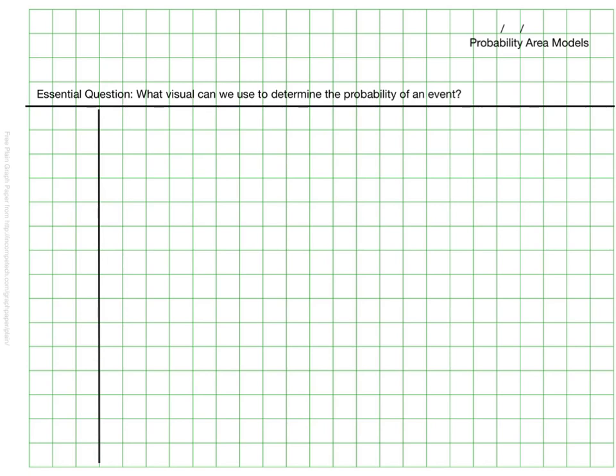We have seen several different ways to determine probability so far in this unit. In this video we have one more, the area model. In the area model we draw a rectangle or a square and we cut it into pieces to represent the probability of a different event occurring.